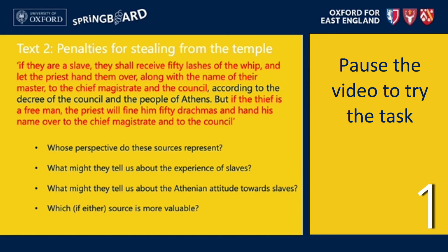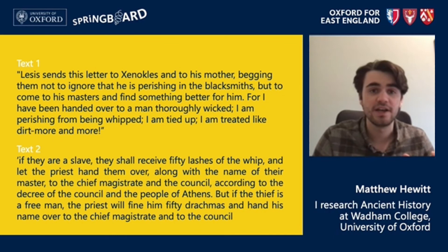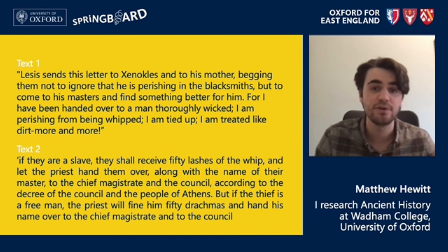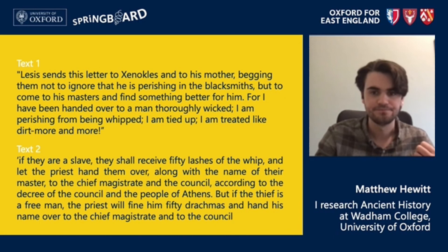Both of these inscriptions provide interesting points for comparison. While text one is from the very rare perspective of an enslaved person, text two is very much the perspective of the establishment. Text one is a private letter with an emotional undertone that gives us a sense of the experience of Lysis as a slave, whereas text two is a public document — very functional and formulaic, quite cold and hard when it comes to slavery.